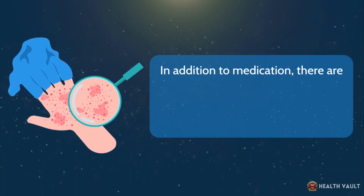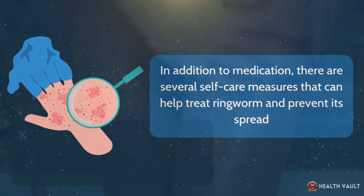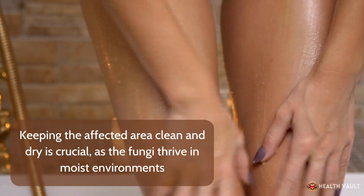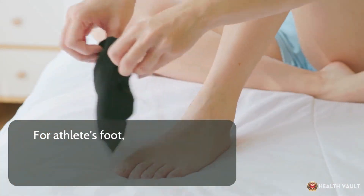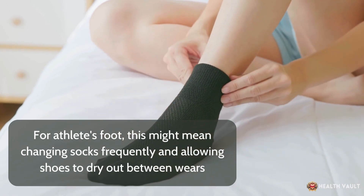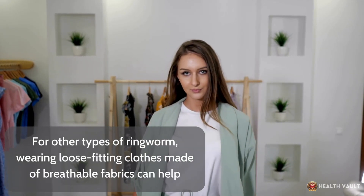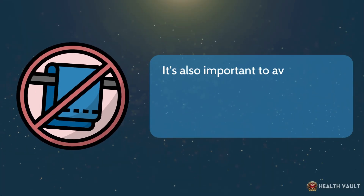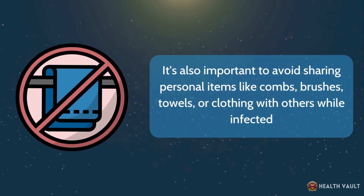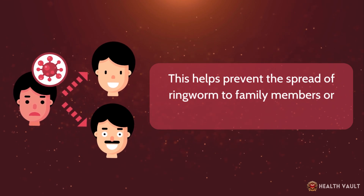In addition to medication, several self-care measures can help treat ringworm and prevent its spread. Keeping the affected area clean and dry is crucial, as the fungi thrive in moist environments. For athlete's foot, this might mean changing socks frequently and allowing shoes to dry out between wears. For other types of ringworm, wearing loose-fitting clothes made of breathable fabrics can help. It's also important to avoid sharing personal items like combs, brushes, towels, or clothing with others while infected, to prevent the spread to family members or close contacts.